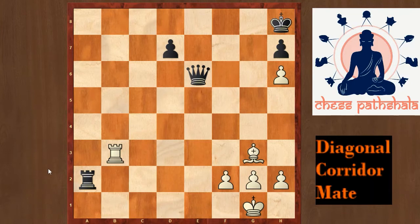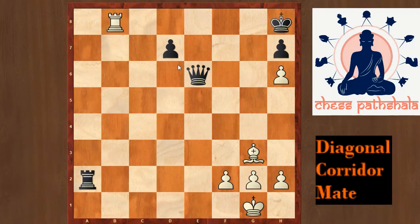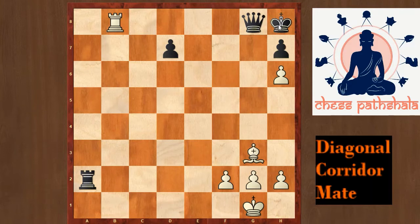This is the basic position of corridor mate. White can deliver checkmate in two moves starting with rook to b8 check. To defend against checkmate, black has to play queen to g8. Now this is the position of diagonal corridor mate. The king is trapped in the corner, and if we manage to give check on this long diagonal, it would be checkmate.